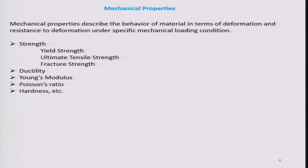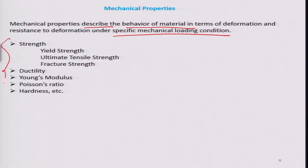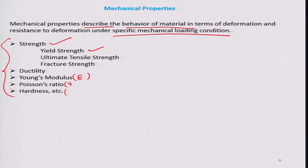In this module we will focus only on the mechanical properties. Mechanical properties describe the behavior of a material in terms of deformation and resistance to deformation under specific mechanical loading conditions. These include strength, yield strength, ultimate tensile strength, fracture strength, ductility, Young's modulus, Poisson's ratio, and hardness.